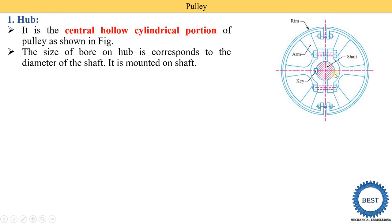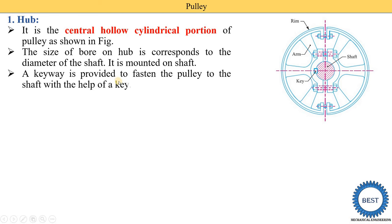The inner diameter of the pulley is also denoted as the size of the bore. The size of this bore is equal to the diameter of the shaft. For example, if the shaft diameter is 50 mm, then the inner hub diameter is also 50 mm. A keyway is provided to fasten the pulley to the shaft with the help of a key — one slot is provided on the hub and one slot on the shaft, and a key is fitted into these slots.